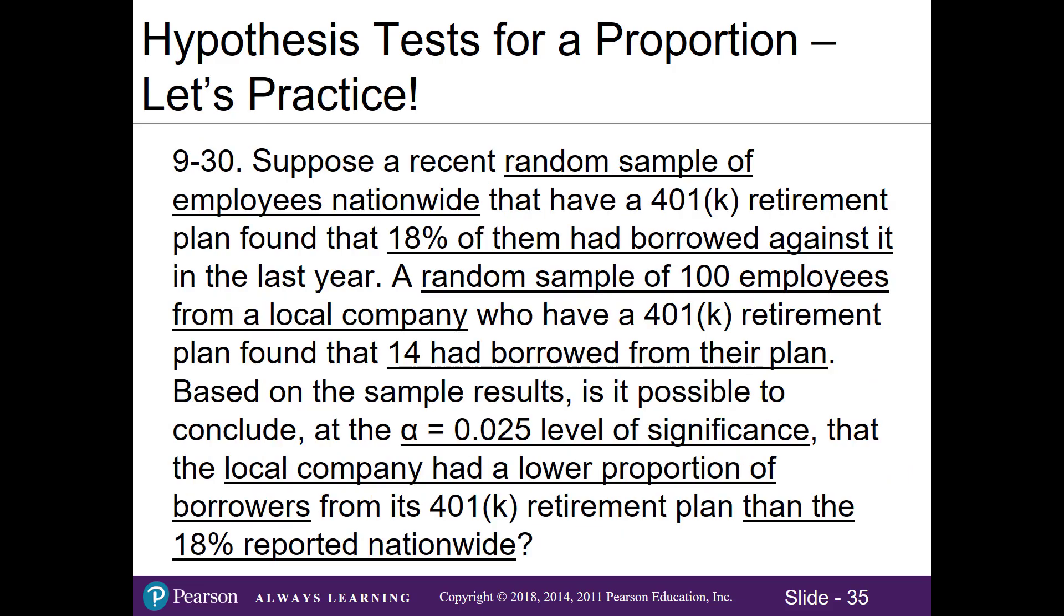Let's go ahead and do problem 30 on our worksheet. It's also our homework problem. Suppose a recent random sample of employees nationwide that have a 401k retirement plan found that 18% of them borrowed against it in the last year. A random sample of 100 employees from a local company who have a 401k retirement plan found that 14 had borrowed from their plan. Based on the sample results, is it possible to conclude at the alpha level of 0.025 level of significance that the local company had a lower proportion of borrowers from its retirement plan than the 18% reported nationwide?